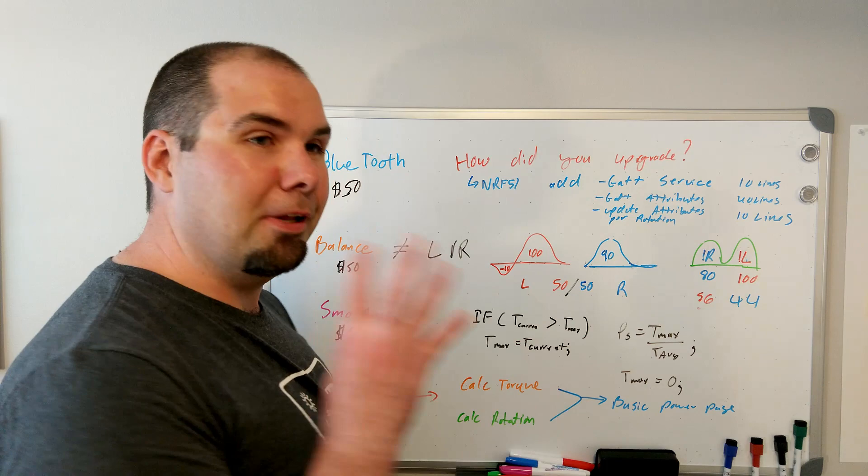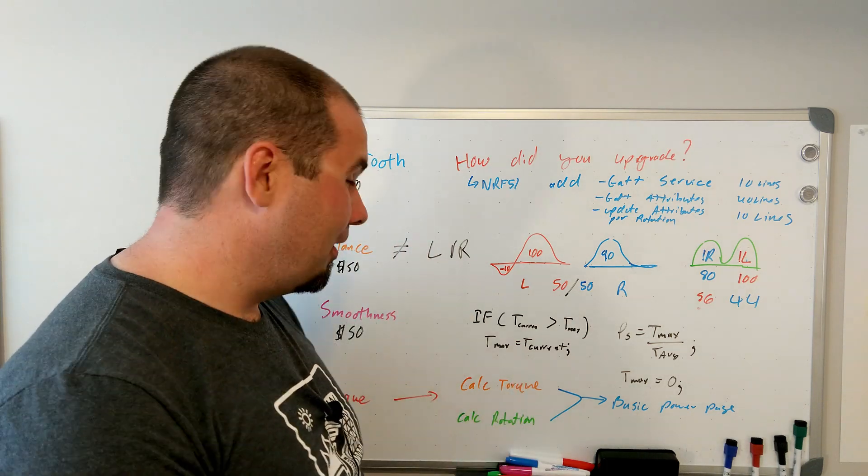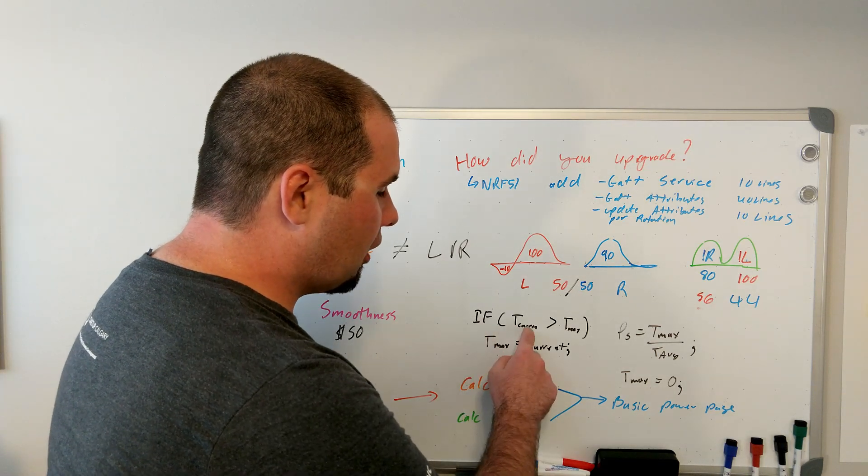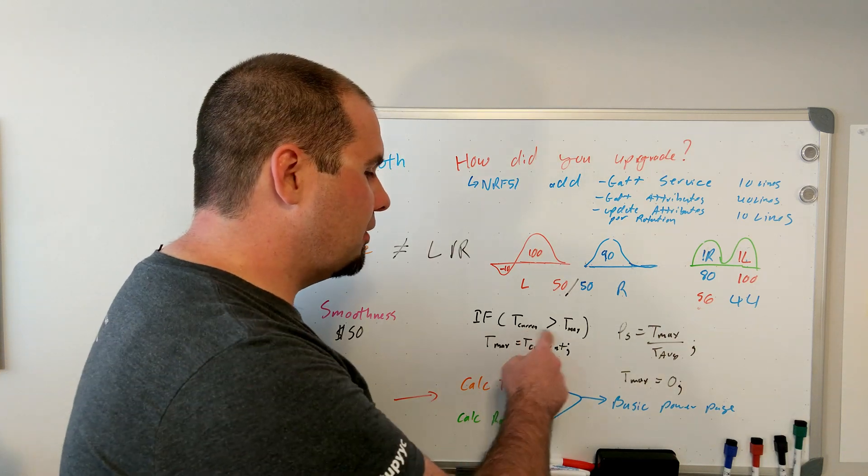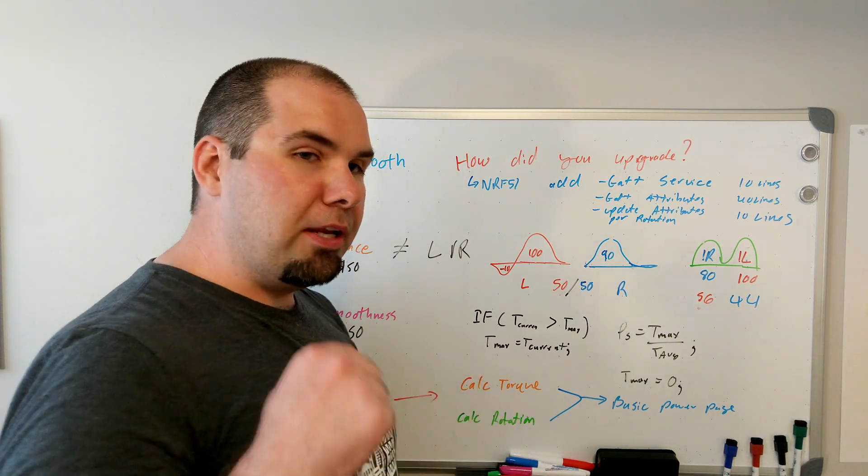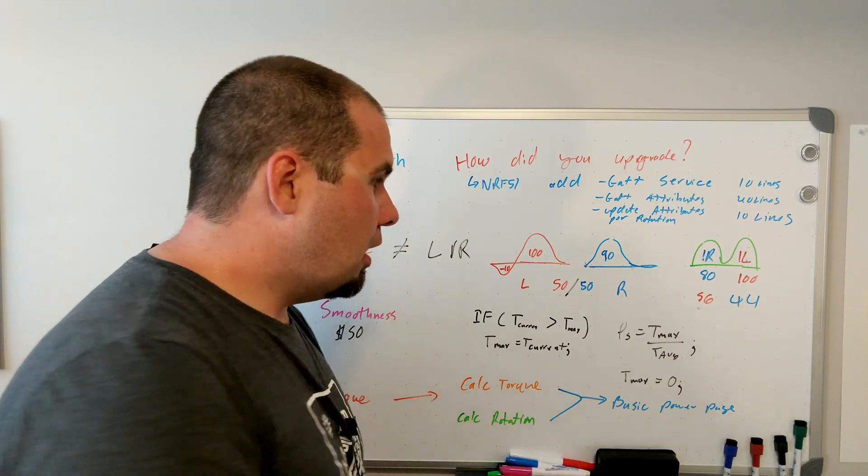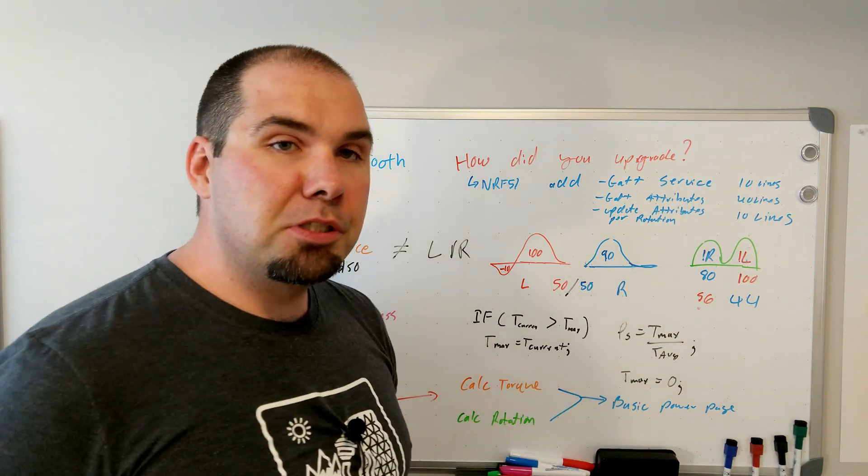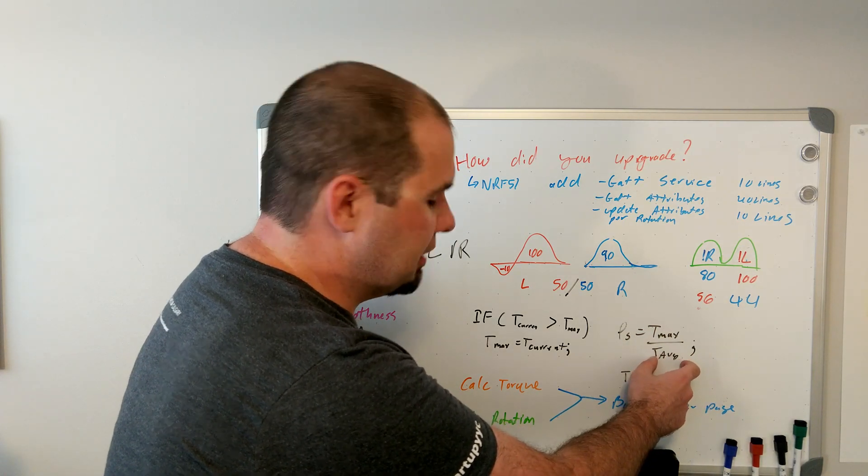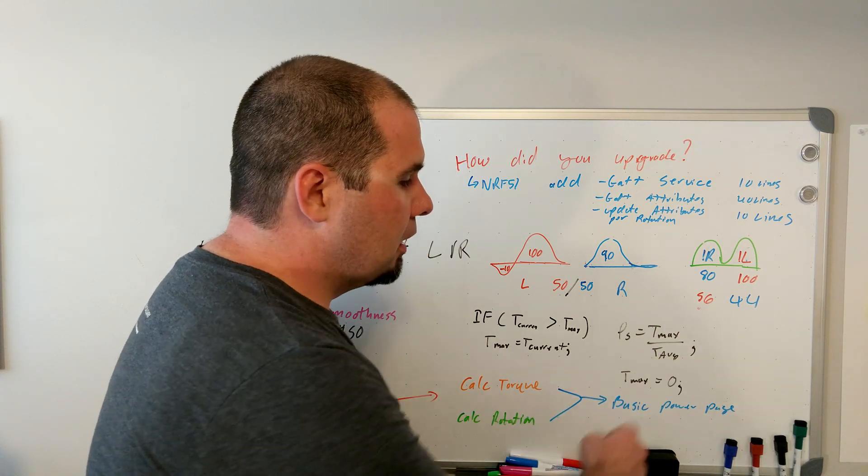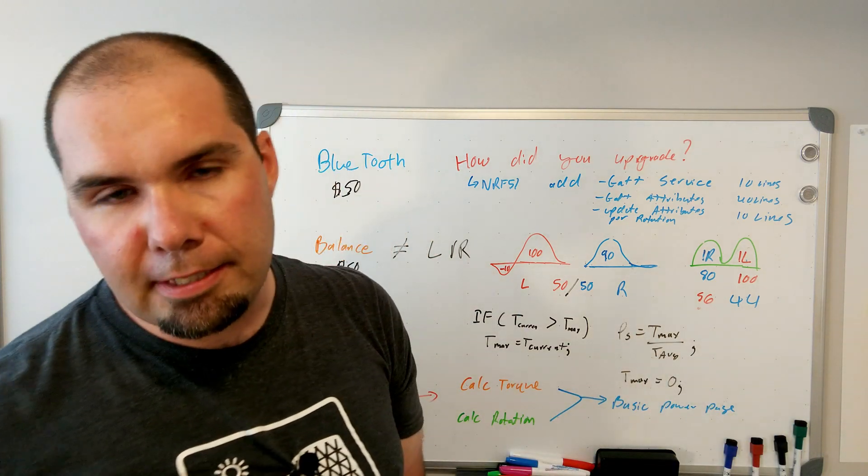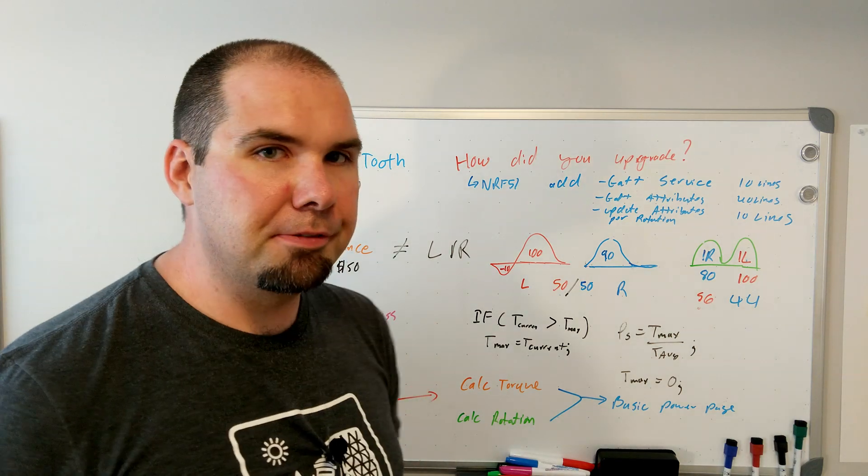But also, it's four lines of code. And these are the lines of code. Like, legitimately, these are the lines of code. Yes, they're maybe missing a bracket or two. But if the current torque at that instant is greater than the max torque, update your max torque. So, this is just kind of a placeholder. And then, when you get a rotation, this is when you update your ANT+ pages or your attributes. You just calculate your pedal smoothness is equal to your torque max over your torque average. And your torque average is needed to calculate power. So, you calculate that, you update your ANT page, and you reset T-Max. Four lines of code. $50. It's all wrong.